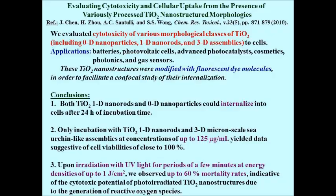TiO2 is useful for batteries, photonics, and gas sensors. All of these particular nanorods could be internalized into cells, often at concentrations of 125 micrograms per mL. Cytotoxicity only occurred when these structures were irradiated with UV light — for instance, at energies of 1 joule per centimeter squared, you observe about 60% mortality rates. Otherwise, simply incubating cells with TiO2 doesn't produce any toxicity.